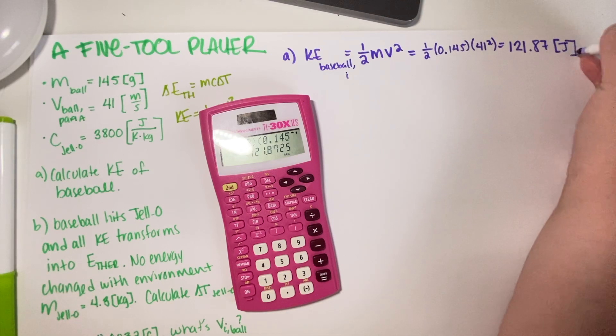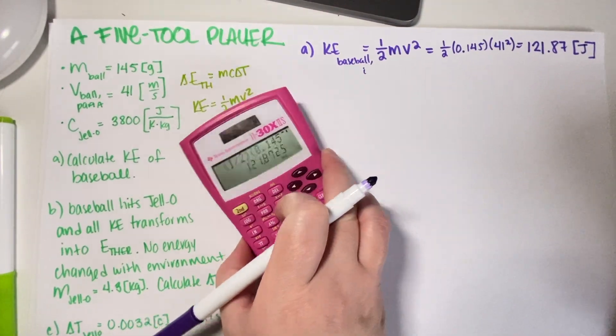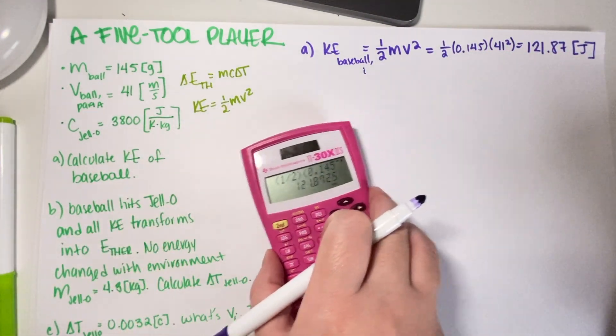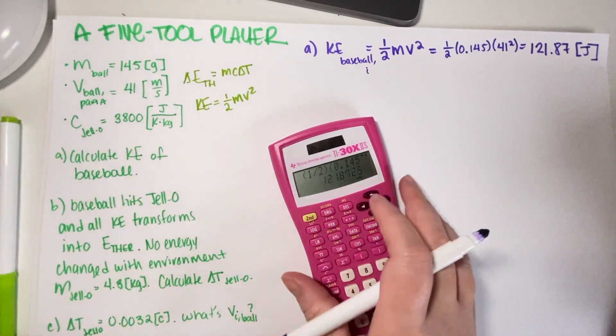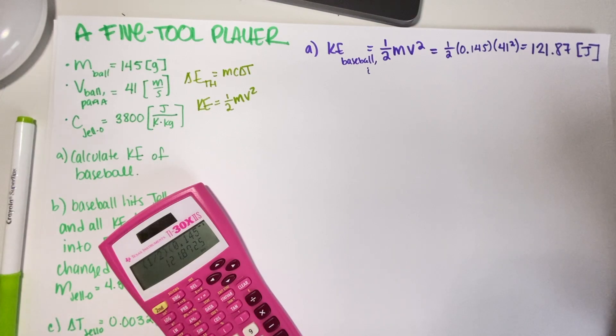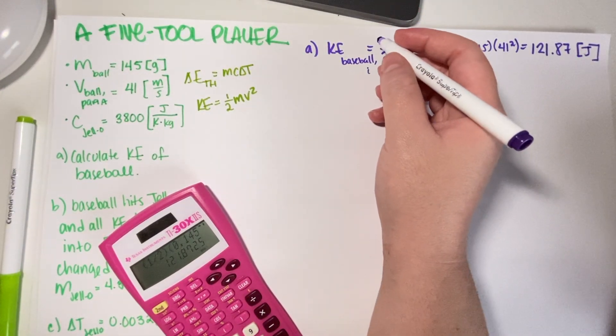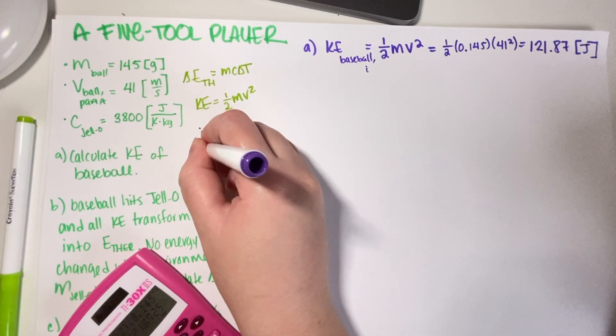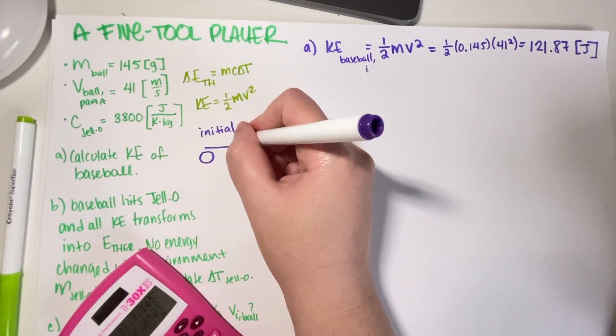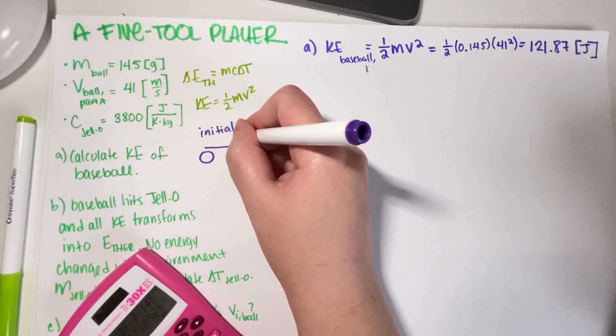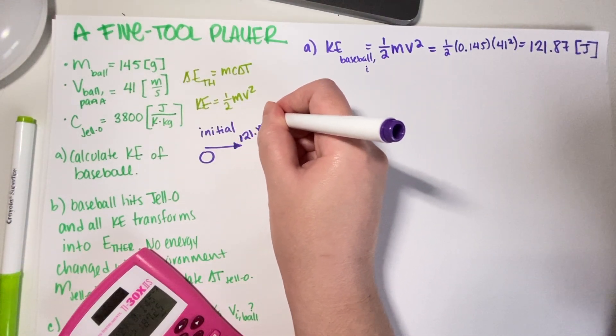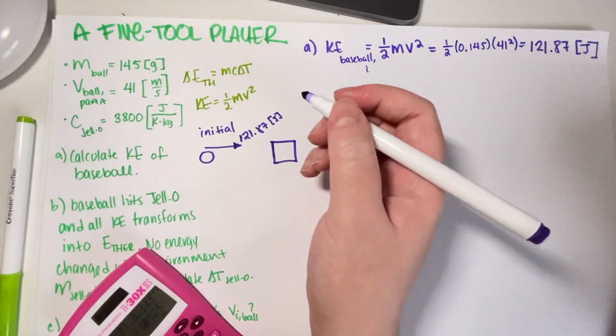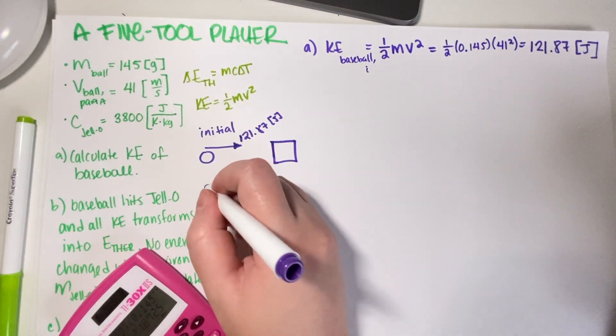Now for Part B, we have to draw an energy interaction diagram and calculate the change in temperature for the jello. So the scenario is basically on your initial, you have a ball going with 121.87 joules of energy, and then you have your jello over here. The jello is not moving, so initially it's just on the ground and doesn't have any energy.